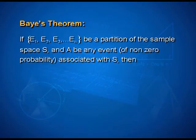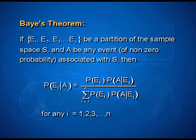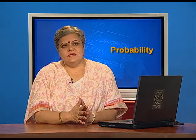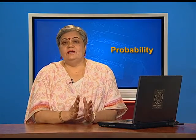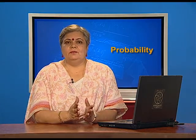Let us consider what Bayes theorem states. If E1, E2, E3 up to En are partitions of the sample space S, and A is any event of non-zero probability associated with S — the same setup as in total probability — then the probability of Ei given that A has happened, for example the probability of bag X given that a red ball was taken out, equals P(Ei)·P(A|Ei) divided by Σ P(Ei)·P(A|Ei), for any i from 1 to N.